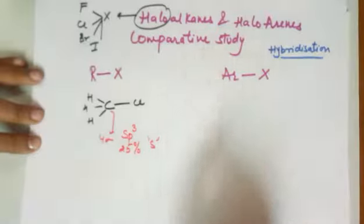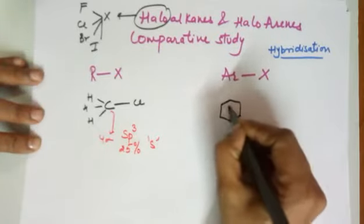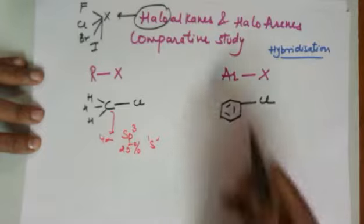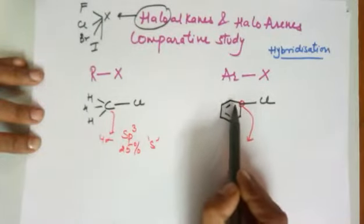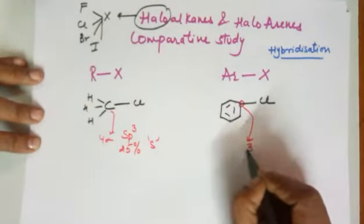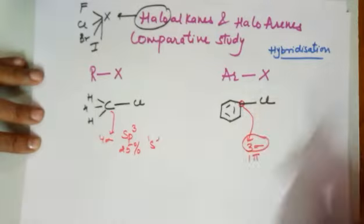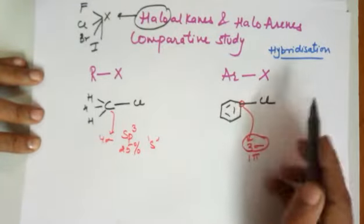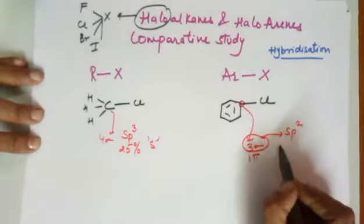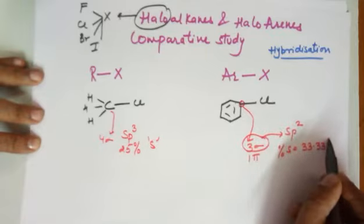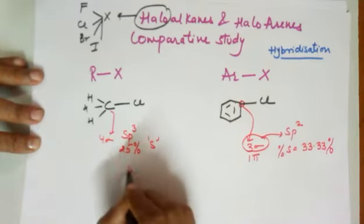Apart from this, if we talk about haloarenes — arenes means a benzene ring — and again I'll take Cl for comparison. This particular carbon has four bonds, out of which three are sigma and one is a pi bond. Hybridization is decided by sigma bonds and lone pairs; lone pairs on carbon are none. So three sigma bonds give it a hybridization of sp2, and in sp2 the percentage s-character is 33.33%.